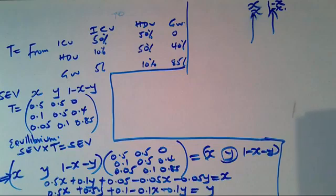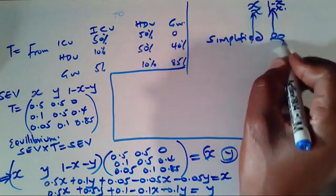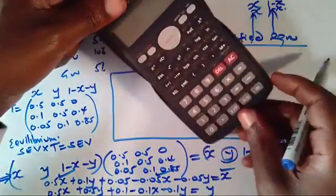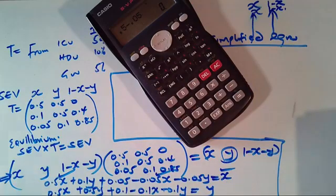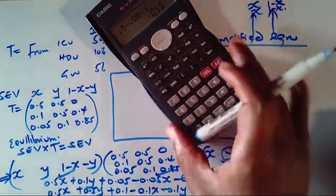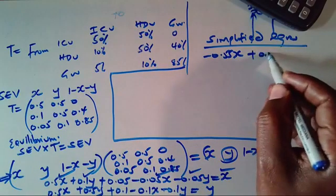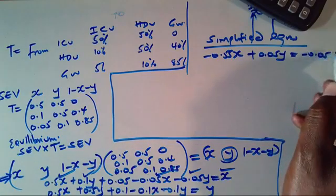Now simplify by collecting like terms. Equation 1: (0.5 − 0.05 − 1)X + (0.1 − 0.05)Y + 0.05 = 0, which gives −0.55X + 0.05Y = −0.05. Equation 2: (0.5 − 0.1 − 1)X + (0.5 − 0.1 − 1)Y + 0.1 = 0, which gives 0.4X − 0.6Y = −0.1.